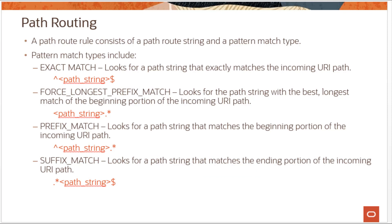A path route rule consists of a path route string and a pattern match type. Pattern match types include: exact match, which looks for a path string that exactly matches the incoming URI path; force longest prefix match, which looks for the path string with the best longest match of the beginning portion of the incoming URI path; and suffix match, which looks for a path string that matches the ending portion of the incoming URI path. Path route rules apply only to HTTP and HTTPS requests and have no effect on TCP requests. You can specify up to 20 path route rules per path route set, and one path route set per listener.